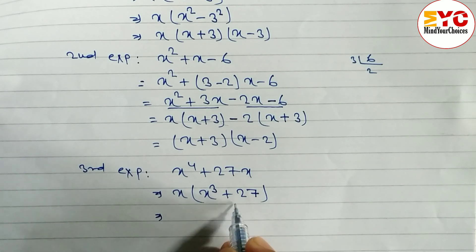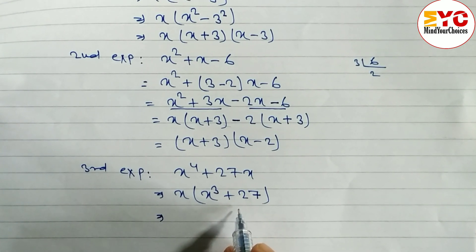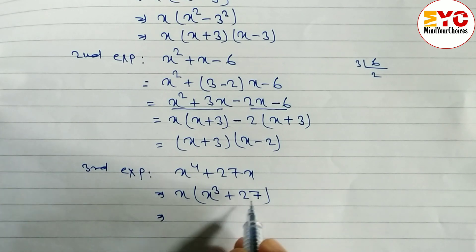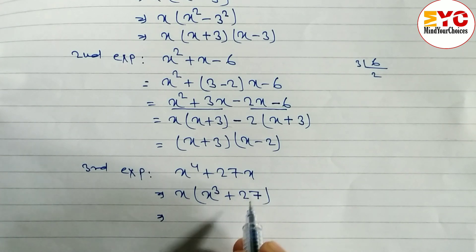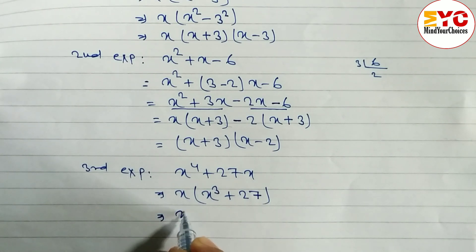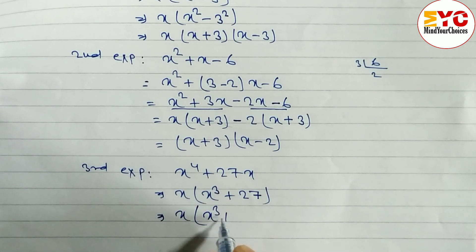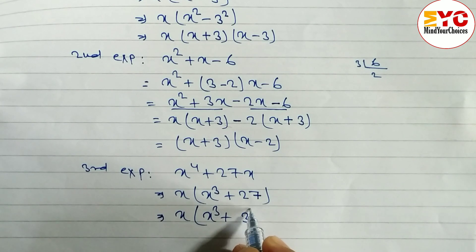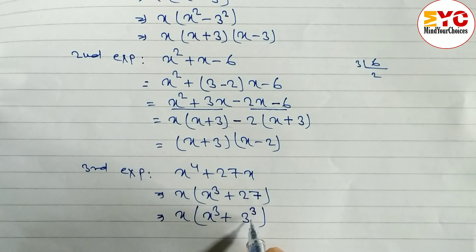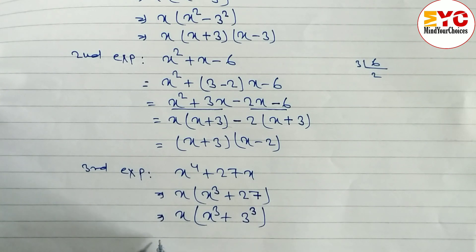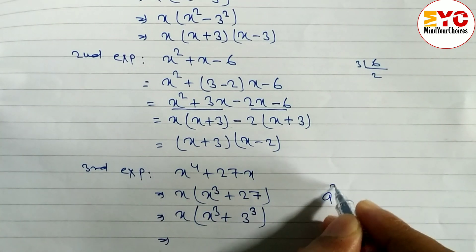After this we have to convert this in the form of a cube plus b cube. You can see here — the cube root of 27 is 3, since 3 into 3 into 3 is 27. So we can write x times the quantity x cube plus 3 power 3.